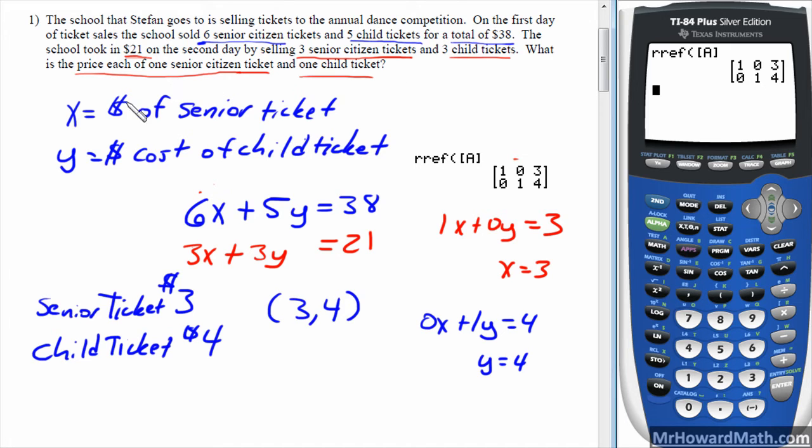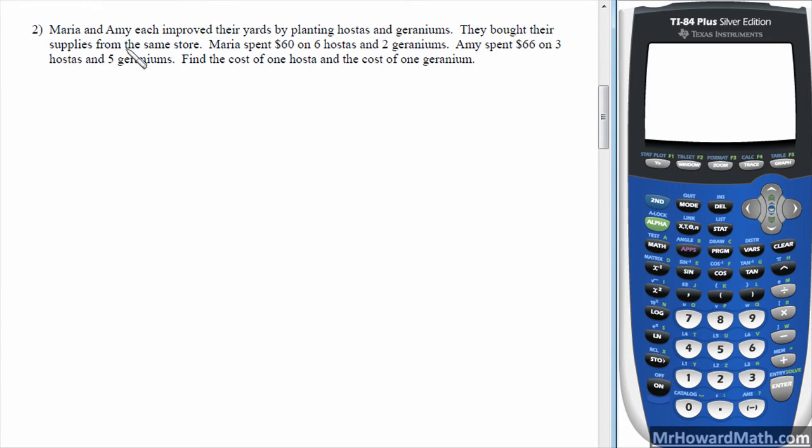So that answers the problem. So it's important to identify the two things you're talking about. Assign your variables, and then really pay attention to what they're asking you to find. So let's move on to the next example. Example 2. Maria and Amy each improved their yards by planting hostas and geraniums. They bought their supplies from the same store. Maria spent $60 on 6 hostas and 2 geraniums. Amy spent $66 on 3 hostas and 5 geraniums. Find the cost of 1 hosta and the cost of 1 geranium.